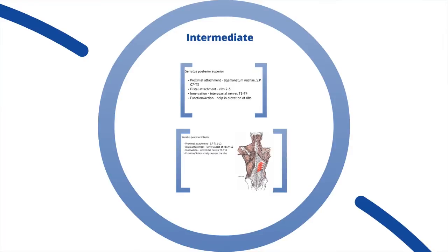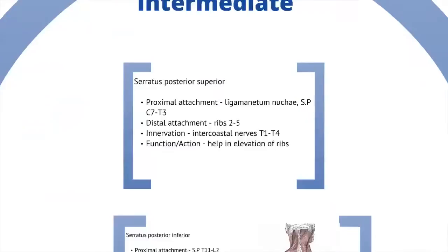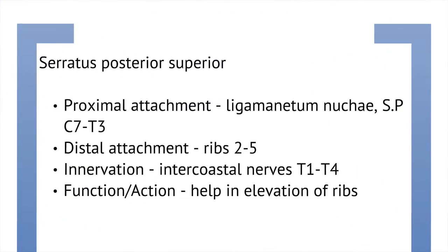Let's move on to the intermediate compartment of the muscles of the back. Let's start with the serratus posterior superior muscle. Unfortunately, because of the awkward position of this muscle, a suitable image couldn't be found, so let's just discuss the attachments. The proximal attachment is the ligamentum nuchae and spinous process of C7 to T3. Its distal attachment is ribs 2 to 5. It's innervated by the intercostal nerves of T1 to T4, and its function is mainly to help elevate the ribs.